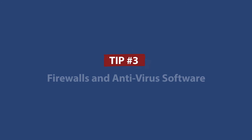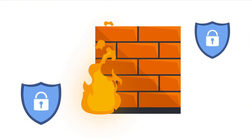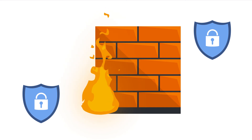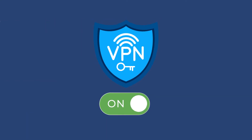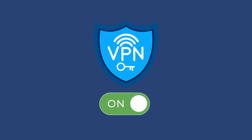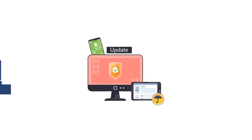Tip number three: firewalls and antivirus software. A firewall is a complex network security system designed to monitor and control network traffic. However, it can sometimes be deactivated by mistake. Make sure your firewall is always turned on. The same goes for your antivirus software — make sure it is activated and up to date.